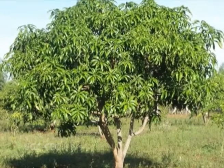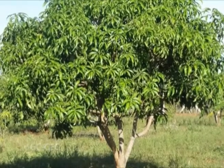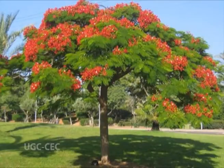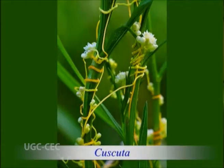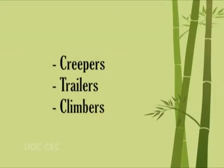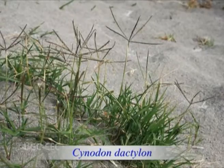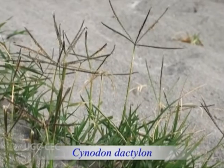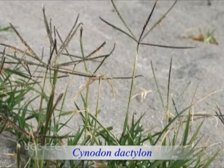When the main axis growth is subordinated by more vigorously growing lateral branches, giving a rounded or spreading appearance to the tree, it is called deliquescent — for example, mango, teak, and Gulmohar. Weak stems are incapable of growing straight or upright without some help, for example, Cuscuta. These may be creepers, trailers, or climbers. Weak-stemmed plants with long or short branches creeping along the ground and rooting at the nodes are called creepers, as in grasses such as Cynodon dactylon.